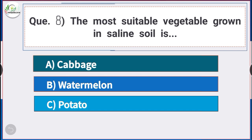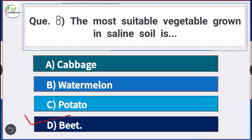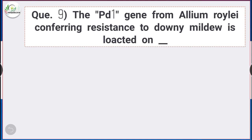Question number 8: The most suitable vegetable grown in saline soil is answer option D — beet. The most suitable vegetable grown in saline soil is beet.